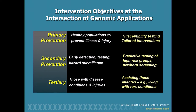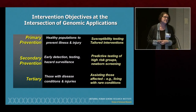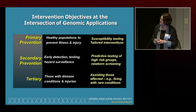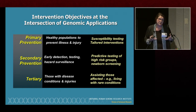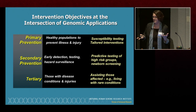The corollary to primary prevention in genetics and translation research would be susceptibility testing and tailoring interventions to those who are already healthy. Secondary prevention in the genomics arena would be predictive testing of high-risk groups and newborn screening — identifying disease early to improve long-term health outcomes. Tertiary intervention helps those already affected with a disease, particularly rare diseases with significant sequelae, such as long-term tamoxifen use in breast cancer.